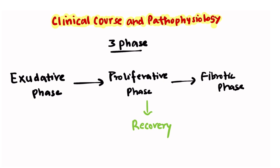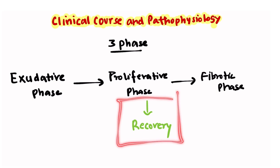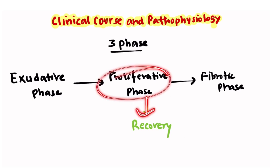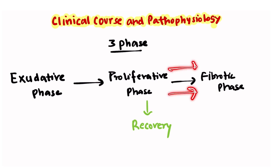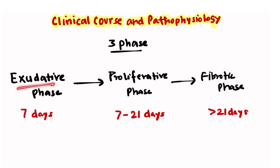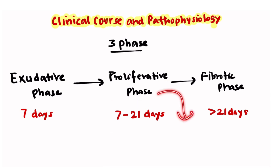ARDS has three phases: the exudative phase, the proliferative phase, and the fibrotic phase. Most patients recover after the proliferative phase, while some land into permanent injury known as the fibrotic phase. The exudative phase lasts for seven days, the proliferative phase spans seven to 21 days, and the fibrotic phase occurs after 21 days.